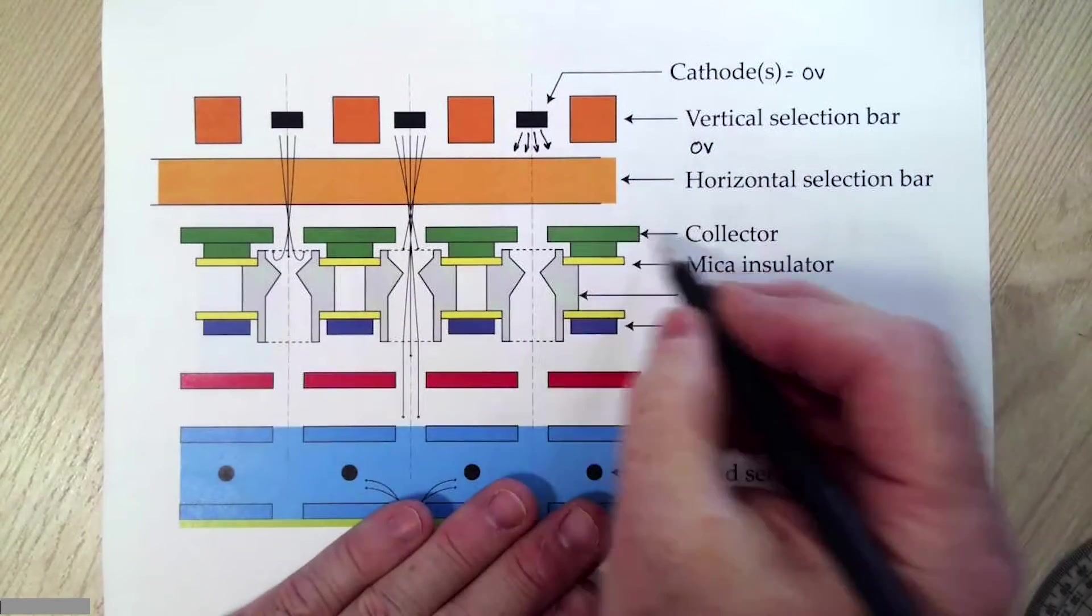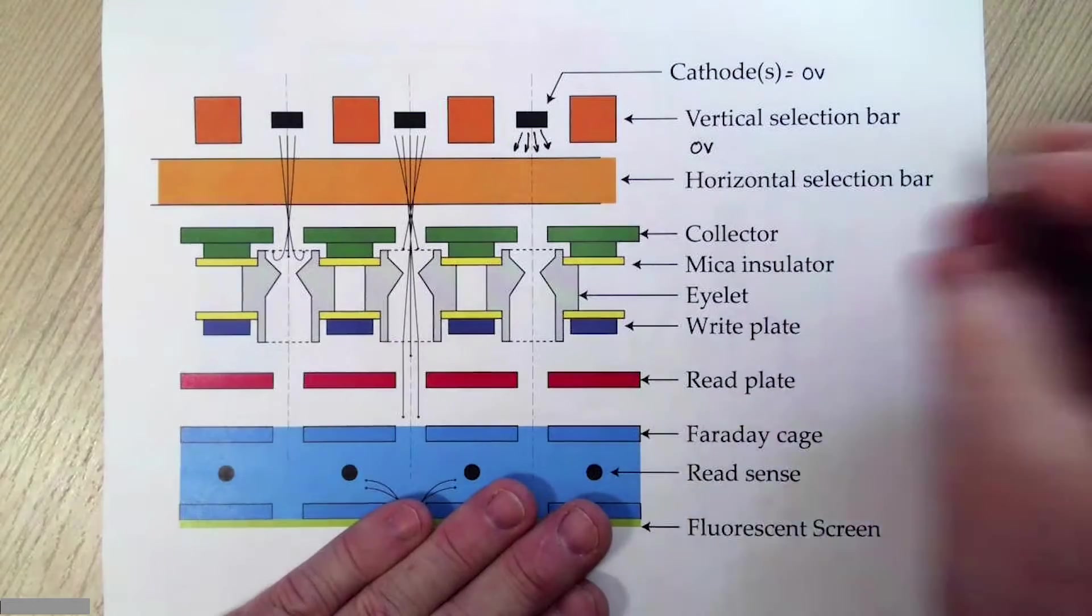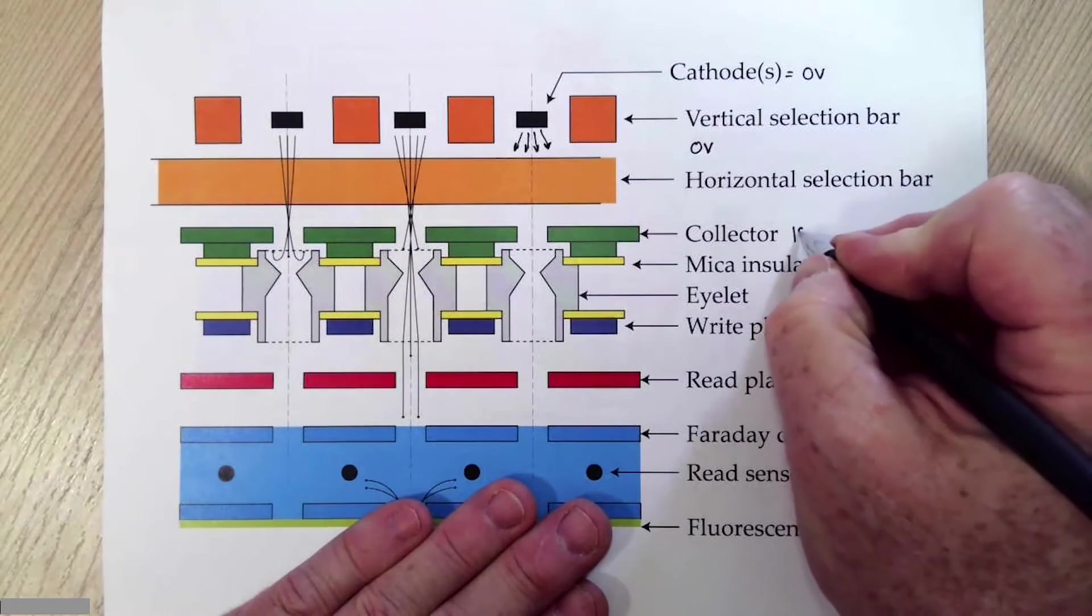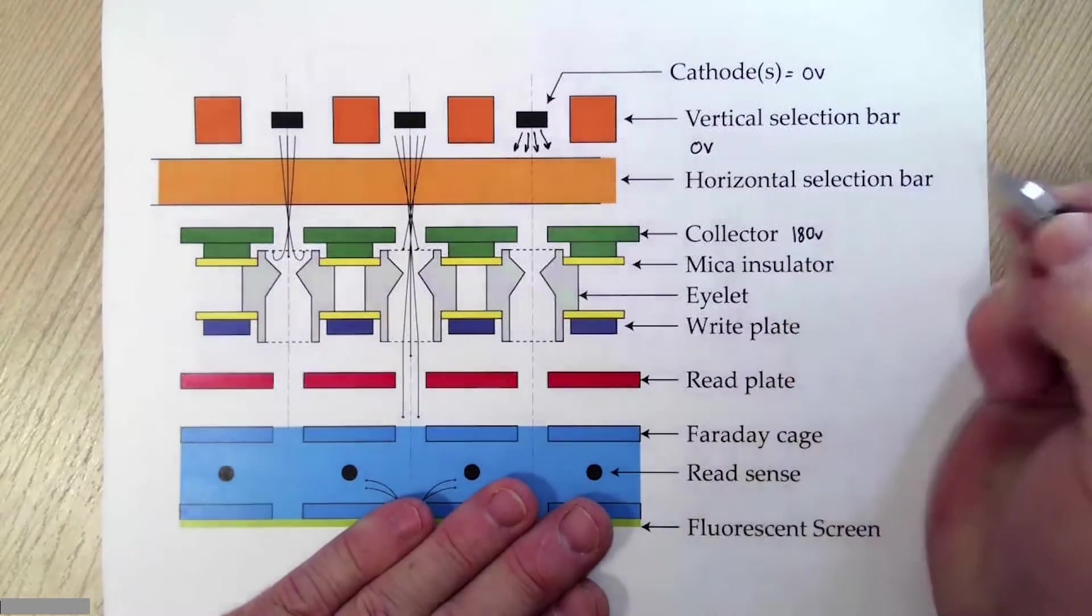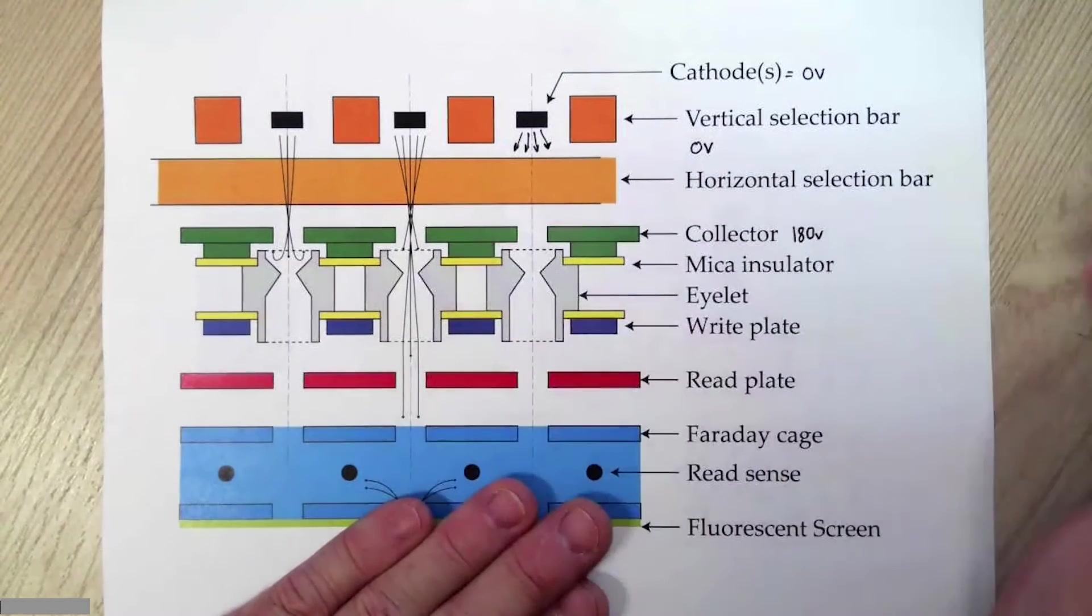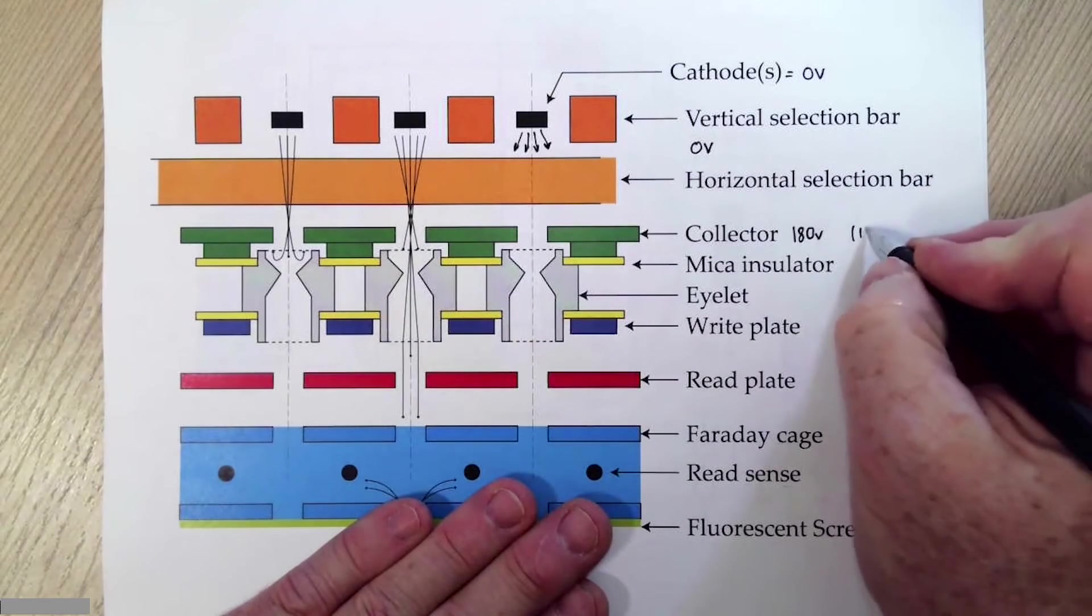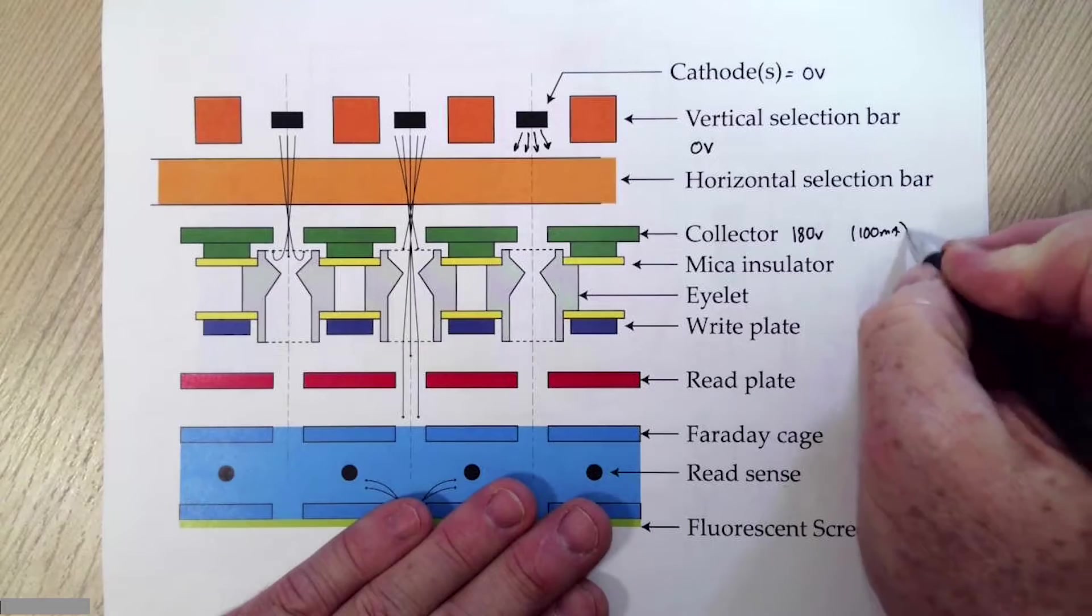So for the moment, let's assume that these guys are all at zero volts. That allows current to come in between each of the bars. And I'm sort of spraying current everywhere.